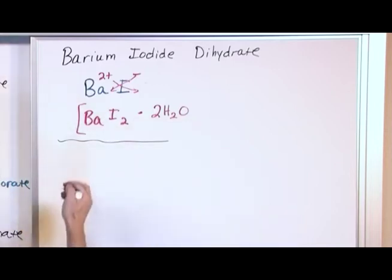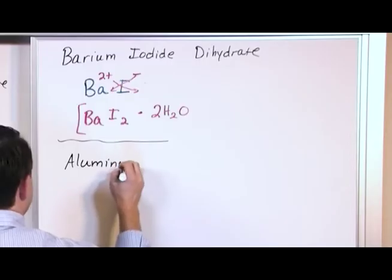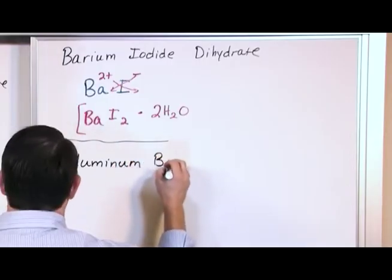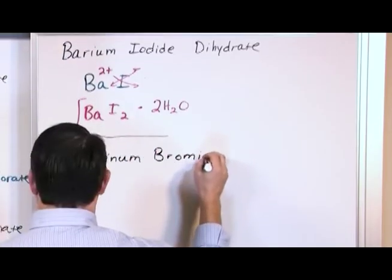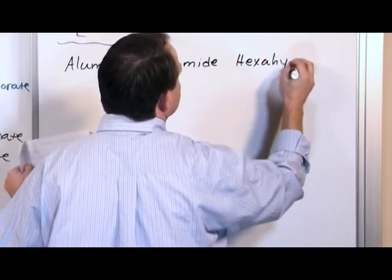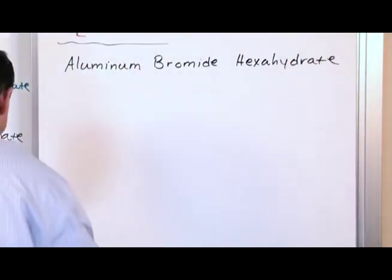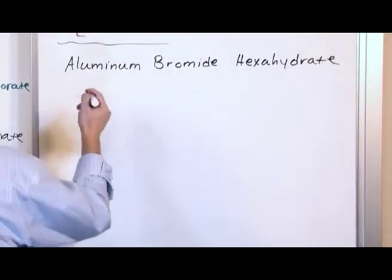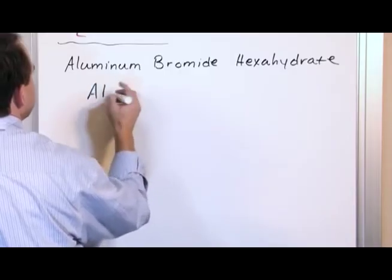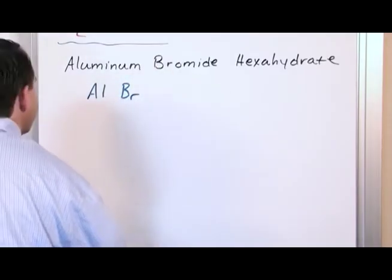What about aluminum bromide hexahydrate? So if on a test you see aluminum bromide hexahydrate, pretty simple. Take aluminum, take bromine, and now we have to figure out the ionic part of the compound here.